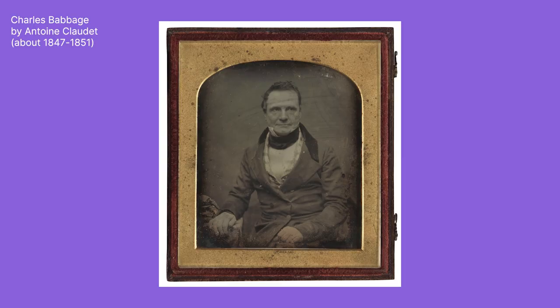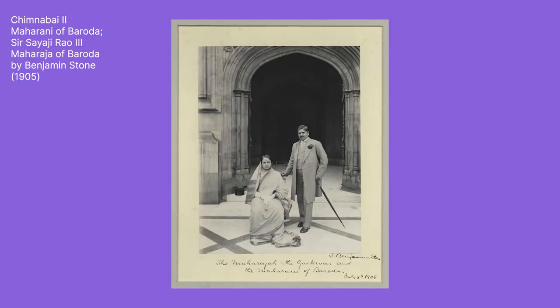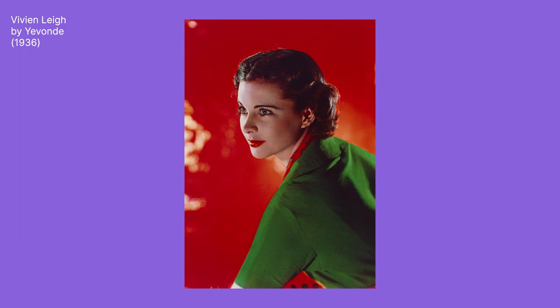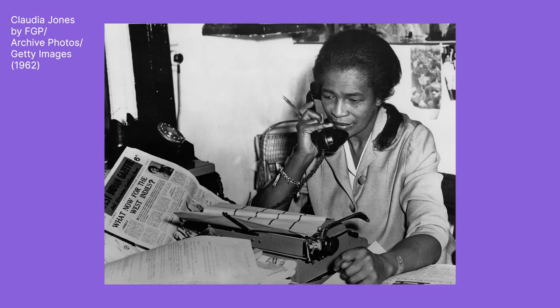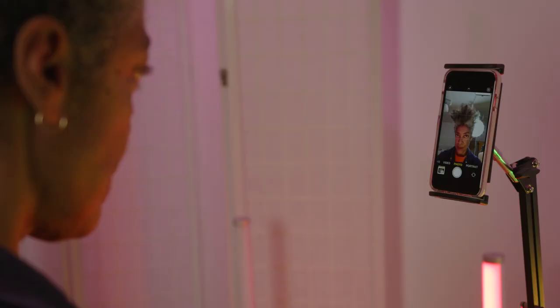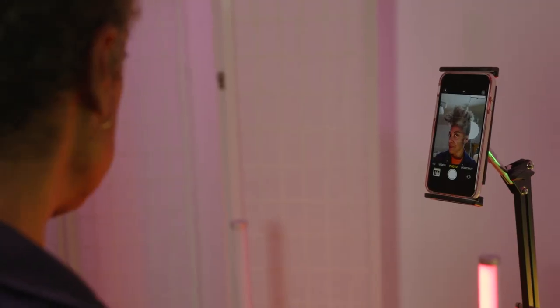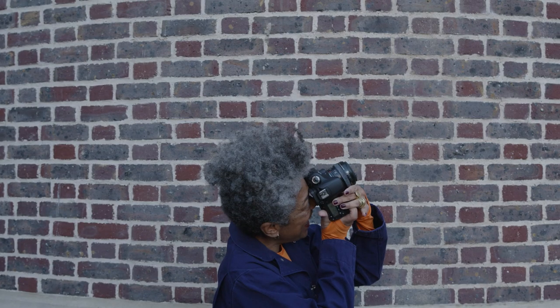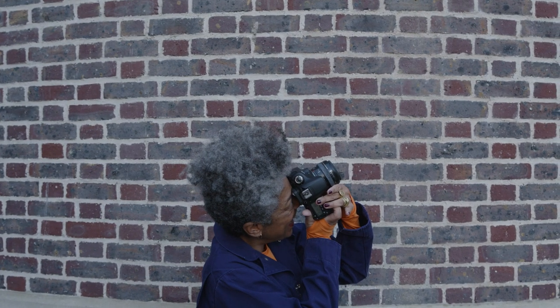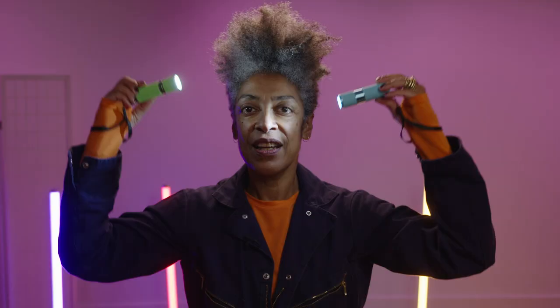Photography has changed a lot since it was invented. While a lot of professional photographers use digital cameras, now one can use camera phones and tablets. Some of the important elements in photography involve lighting, composition and perspective. So here are some of my top tips.